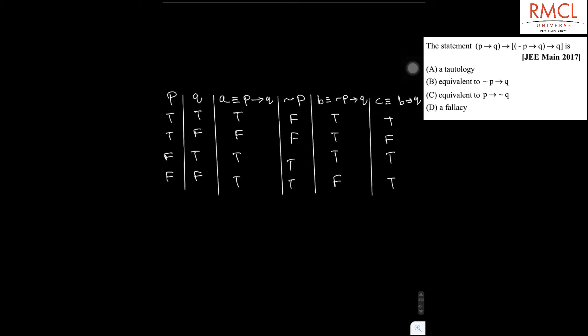Now we have a statement equivalent to the given statement, which is A implies C. The truth table for A implies C gives: true, true, true, true. So we can say the given expression is a tautology, and the correct option is Option A.